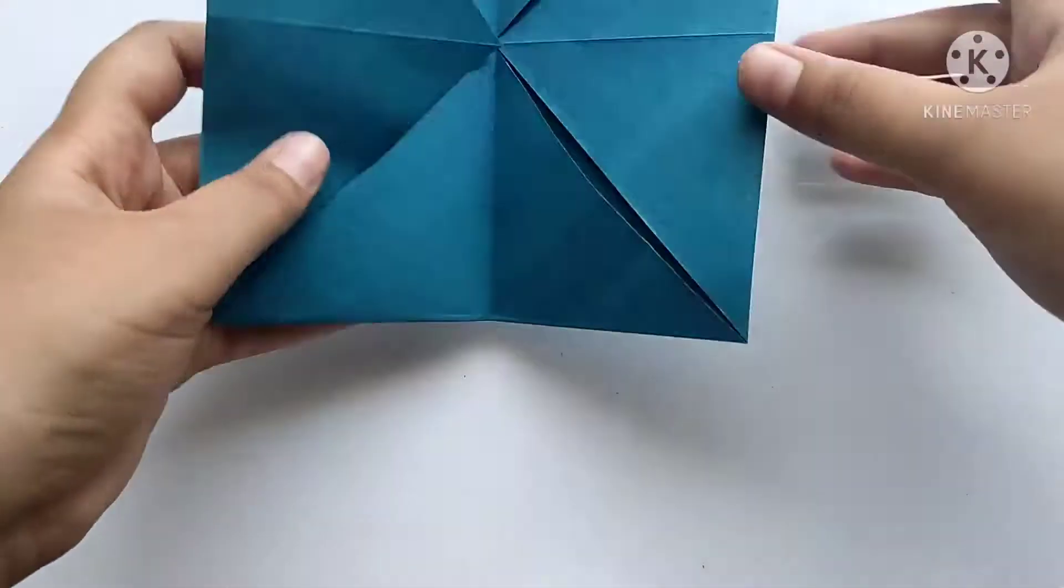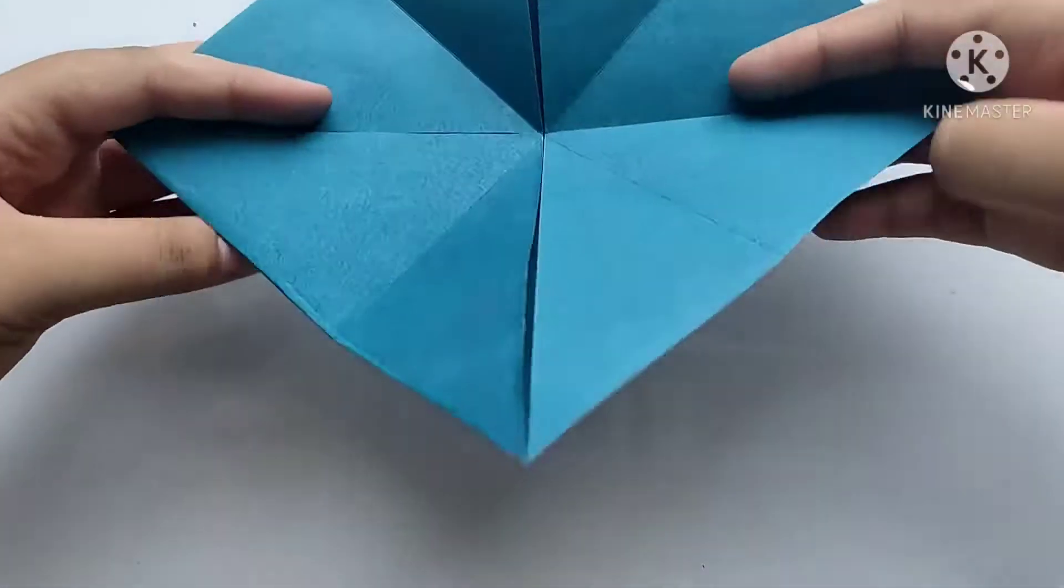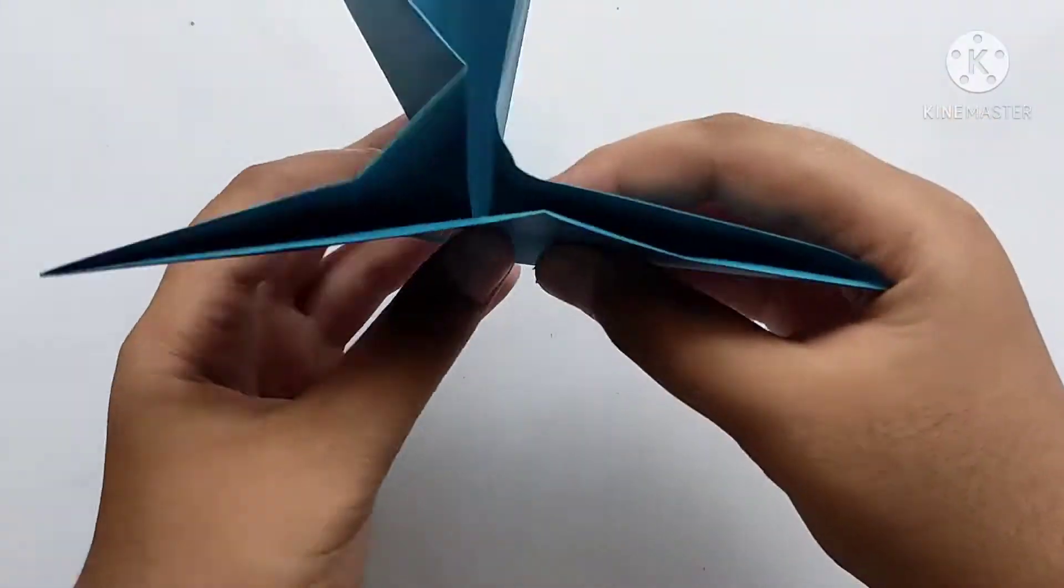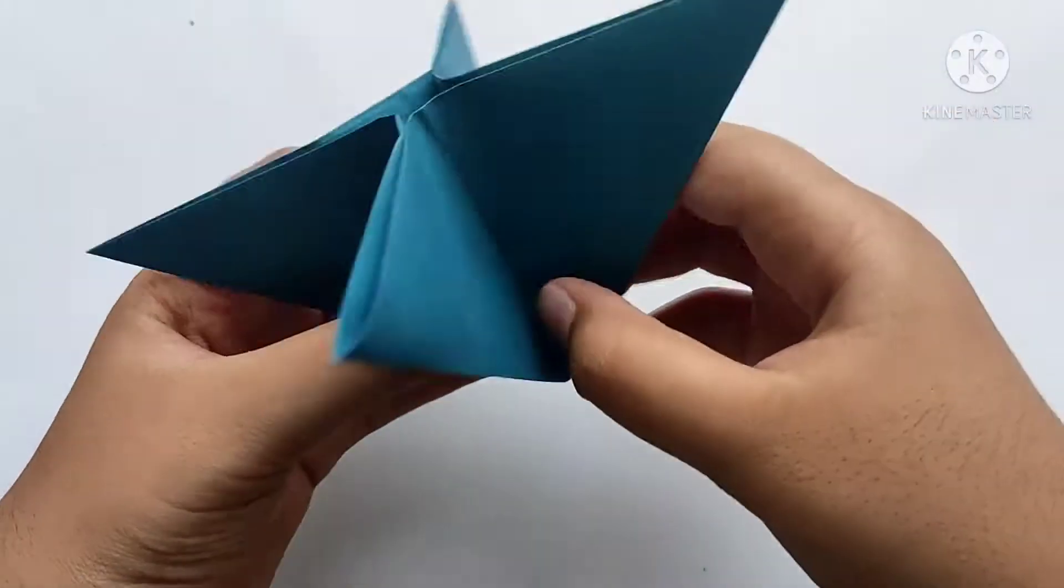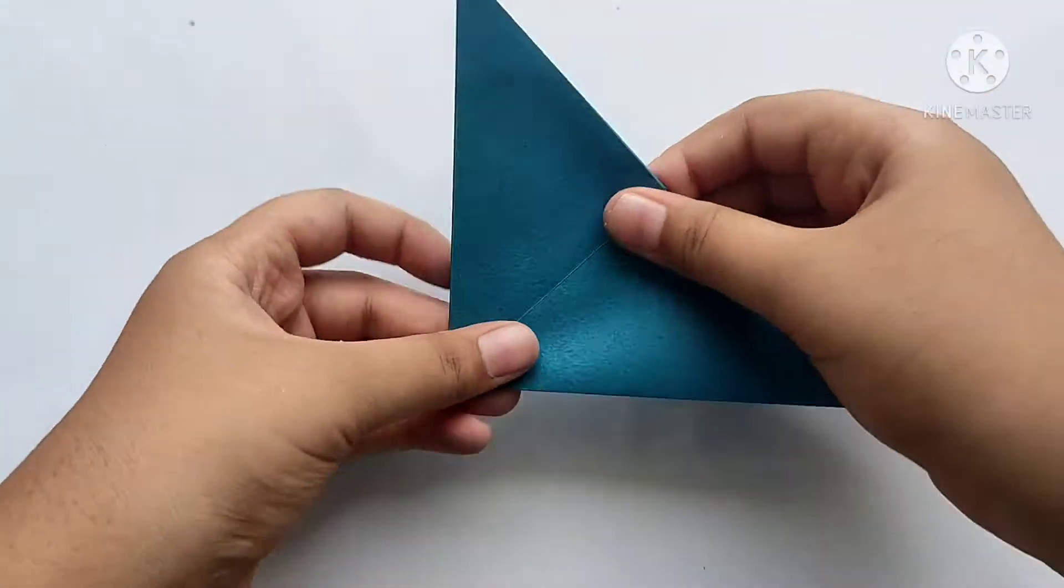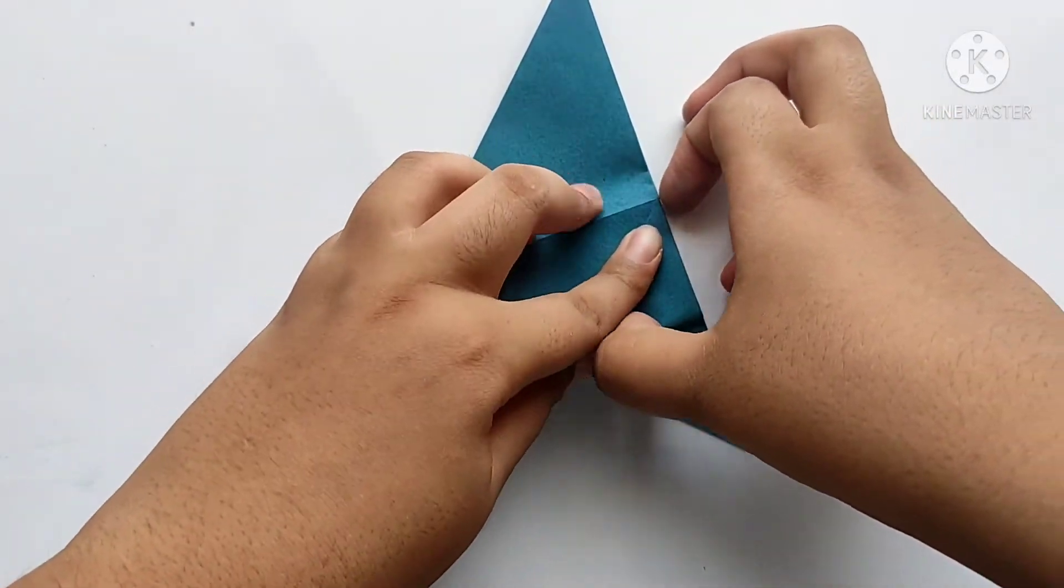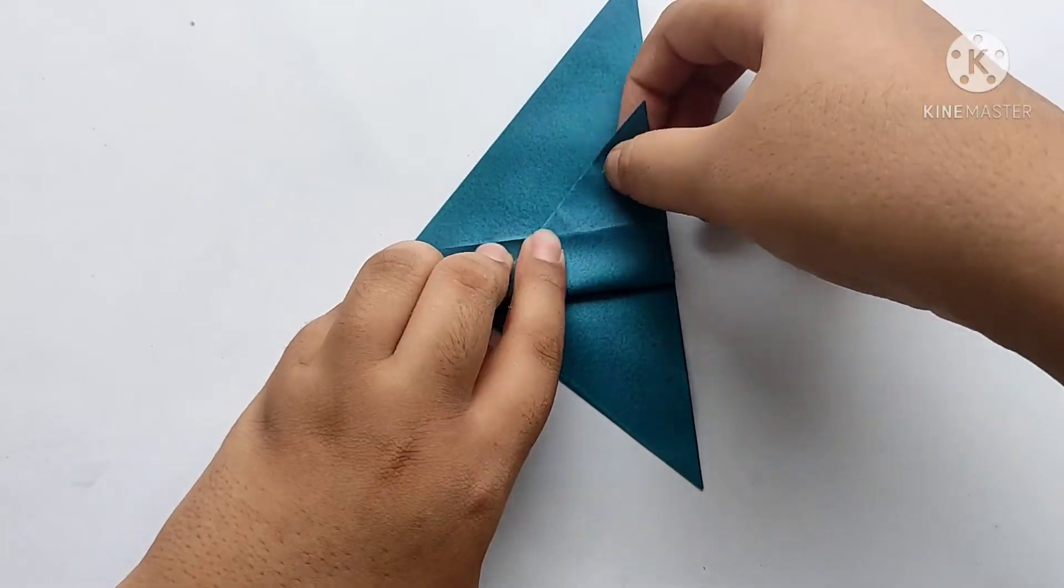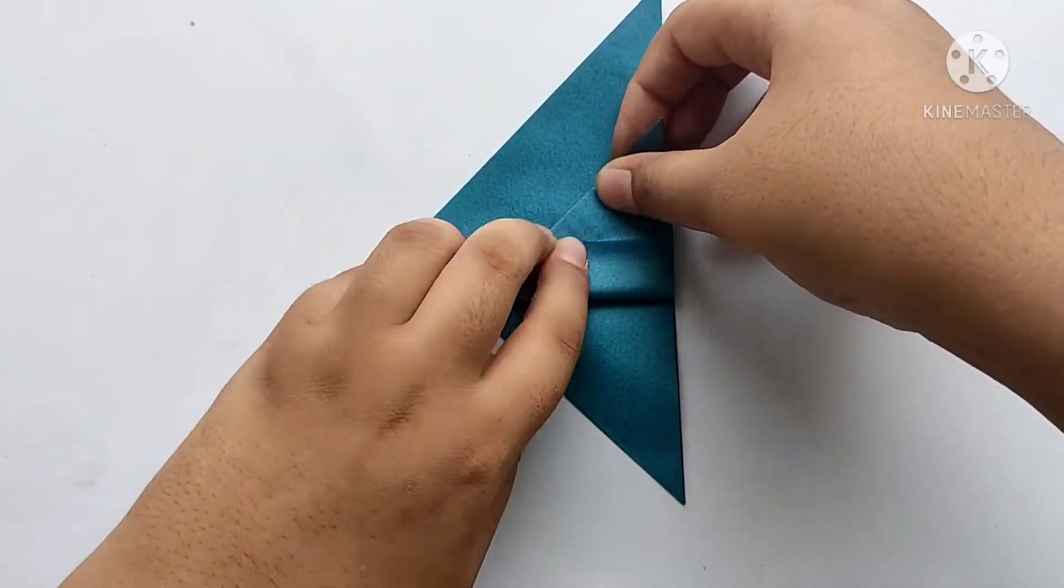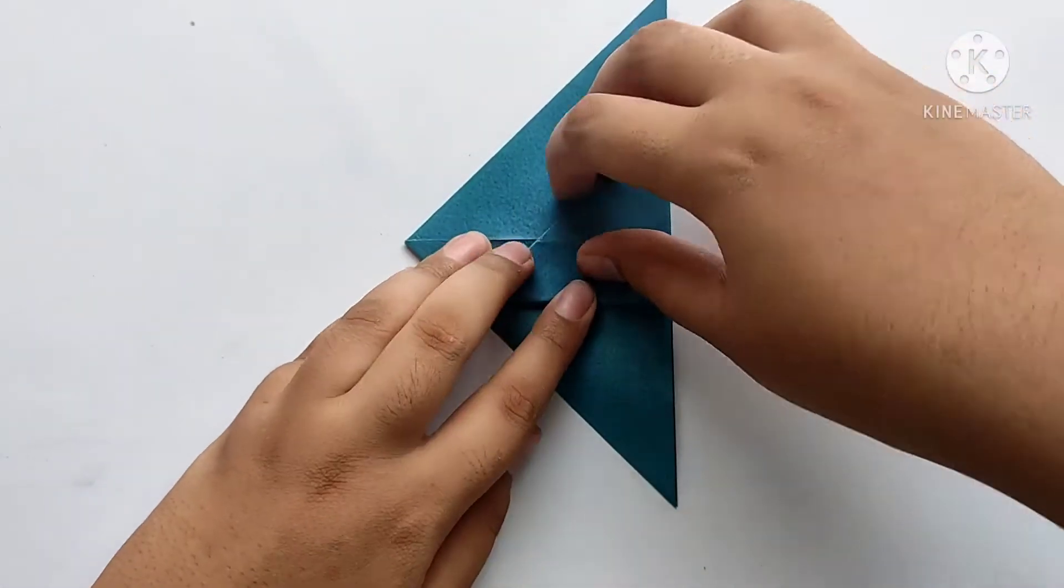After, we need to fold both halves like this and slide over like this by separating forward. Now we need to fold the side to the center line like this and press properly, and fold again the side along the center line.